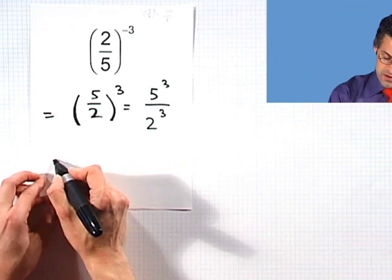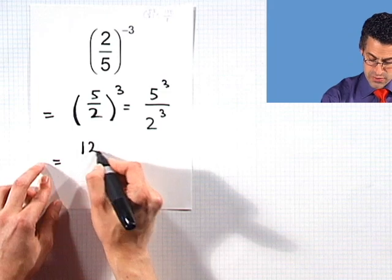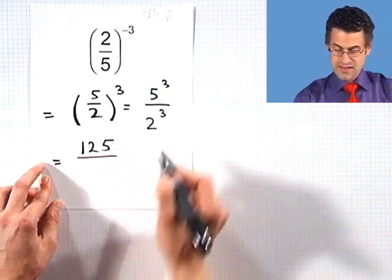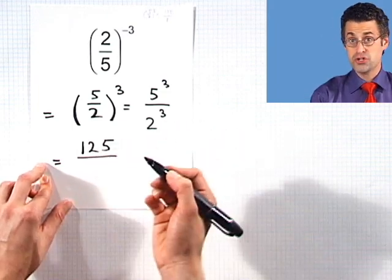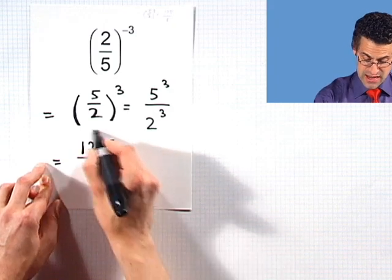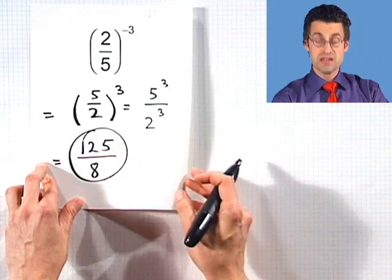And now what does that equal? 5 to the third power is 125, and I divide that by 2 to the third power, or 2 cubed, which is 8. And so I see 125 divided by 8.